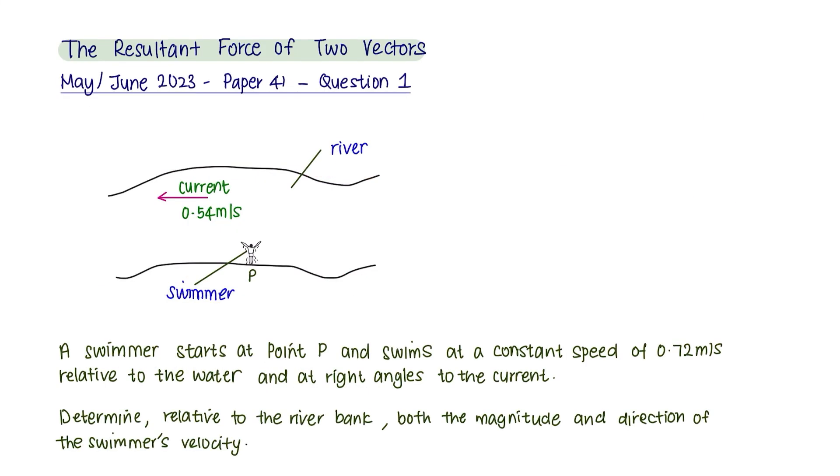Let's look into an example from a past year question from May/June 2023. A swimmer starts at point P and swims at a constant speed of 0.72 meters per second relative to the water and at right angles to the current. Determine relative to the river bank both the magnitude and direction of the swimmer's velocity.